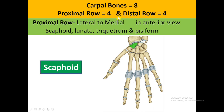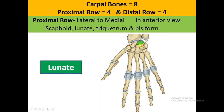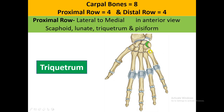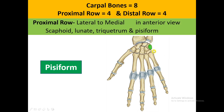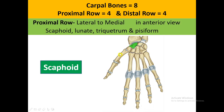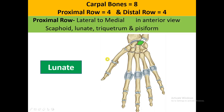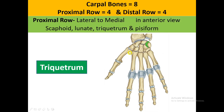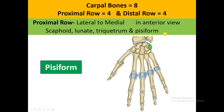The carpal bones are arranged four in the proximal row and four in the distal row. In the proximal row, from lateral to medial, the bones are: scaphoid, which is a boat shape and articulates with the radius; lunate, which is crescent shaped; triquetrum, which is a three-sided bone; and pisiform, which is actually a sesamoid bone in the tendon of the flexor carpi ulnaris muscle.